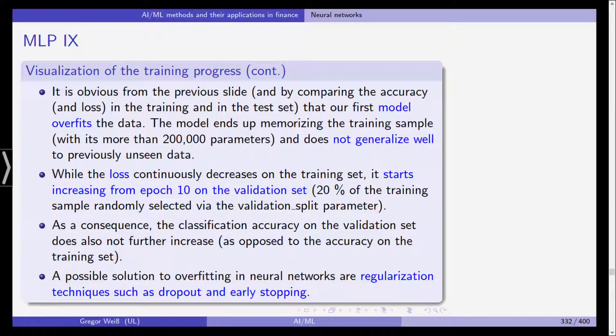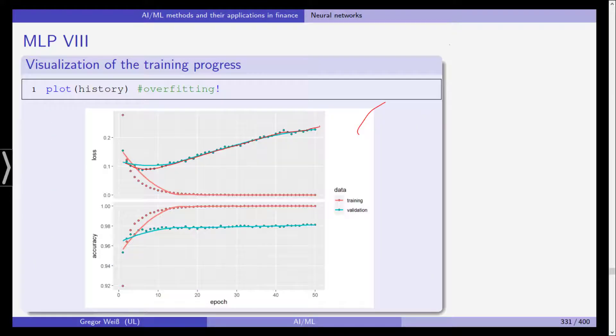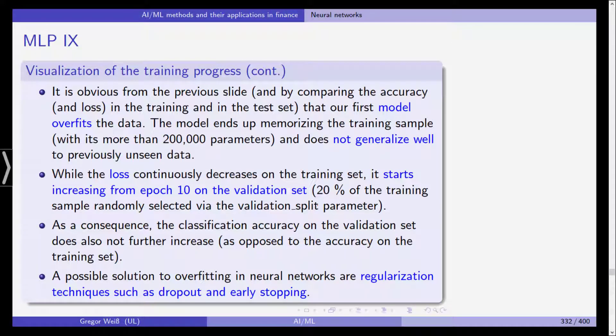As a consequence, the classification accuracy on the validation set does also not further increase. For the training set it's close to 100 percent but not for the validation set. You can see the accuracy doesn't really increase anymore after this point in the validation set.